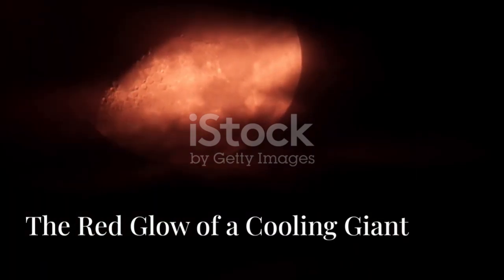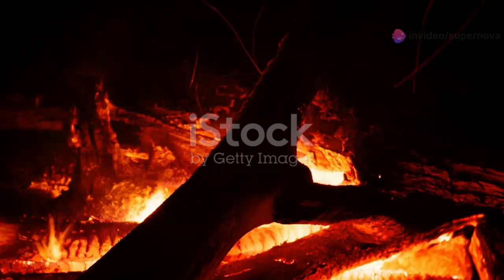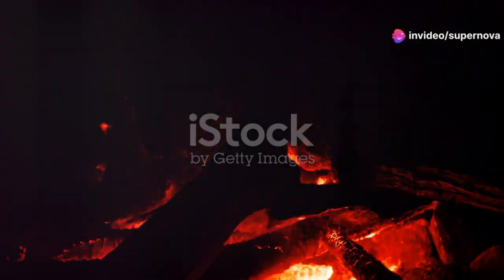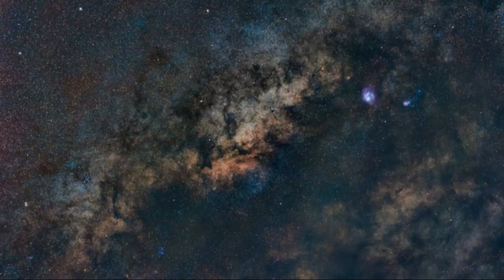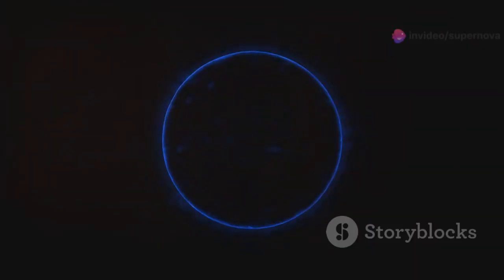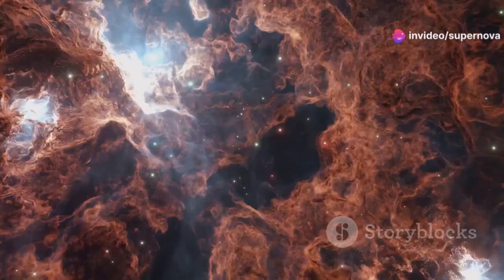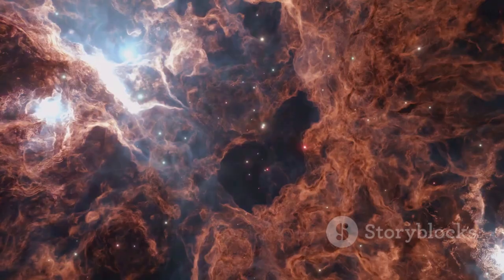Betelgeuse's reddish hue is a telltale sign of its stage in life and its surface temperature. As the star expanded, its outer layers cooled, much like a campfire ember expanding and cooling. This cooling caused the star's light to shift towards the red end of the spectrum. The color of a star is directly related to its surface temperature. Hotter stars emit more blue and ultraviolet light, while cooler stars emit more red and infrared light.